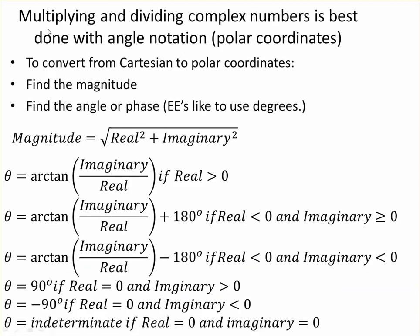Multiplying and dividing complex numbers is best done with angle notation or polar coordinates. First you have to convert the Cartesian to polar, find the magnitude, find the angle or phase.